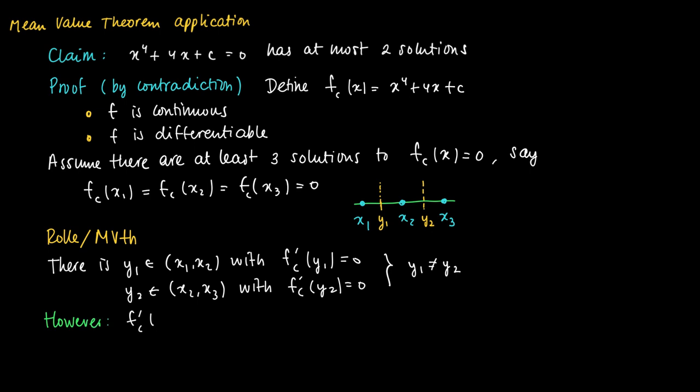However, consider now the derivative. The derivative of the function equals 4x to the power 3 plus 4, and we may factorize this term as follows—you may check it yourself—this equals 4 times (x plus 1) times (x squared minus x plus 1).